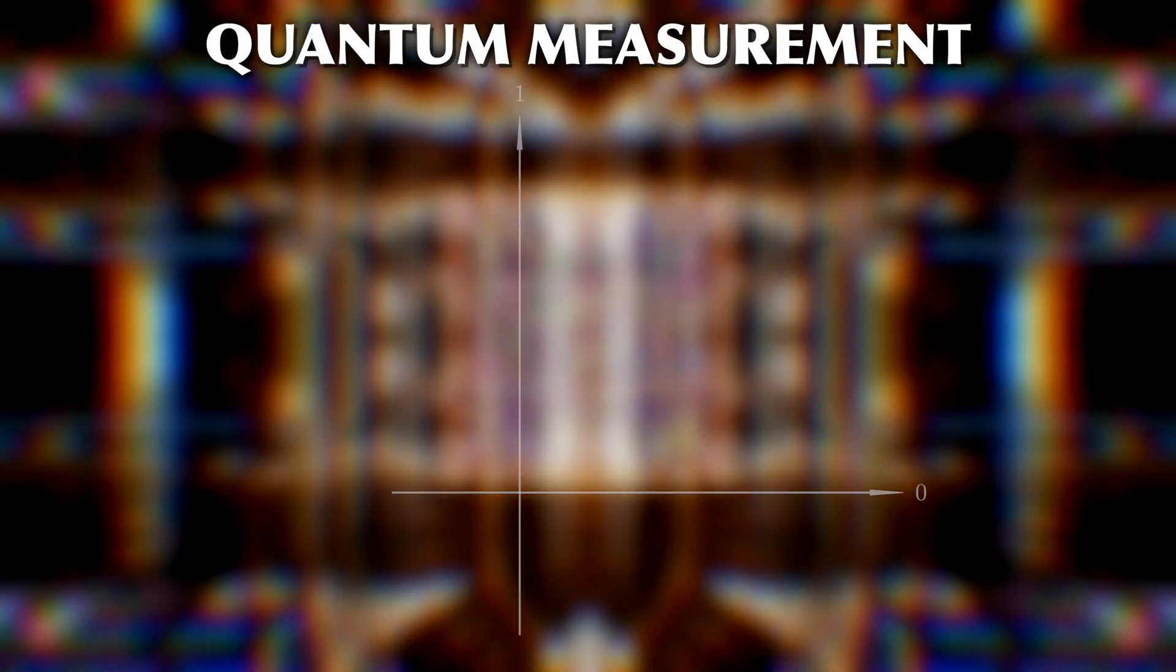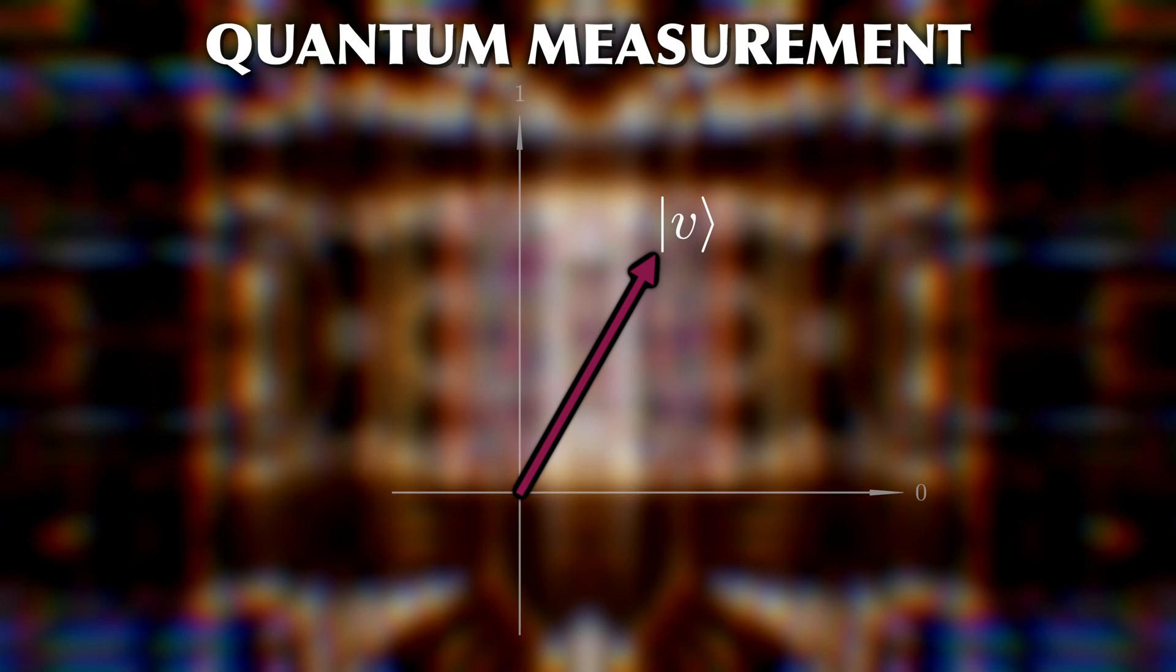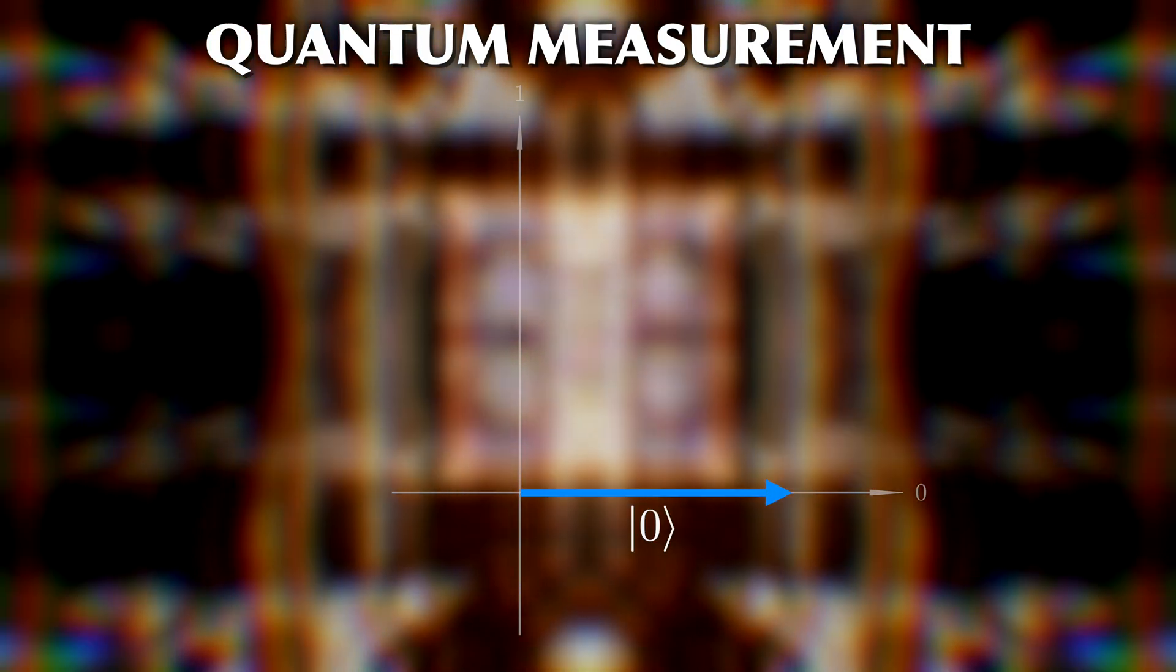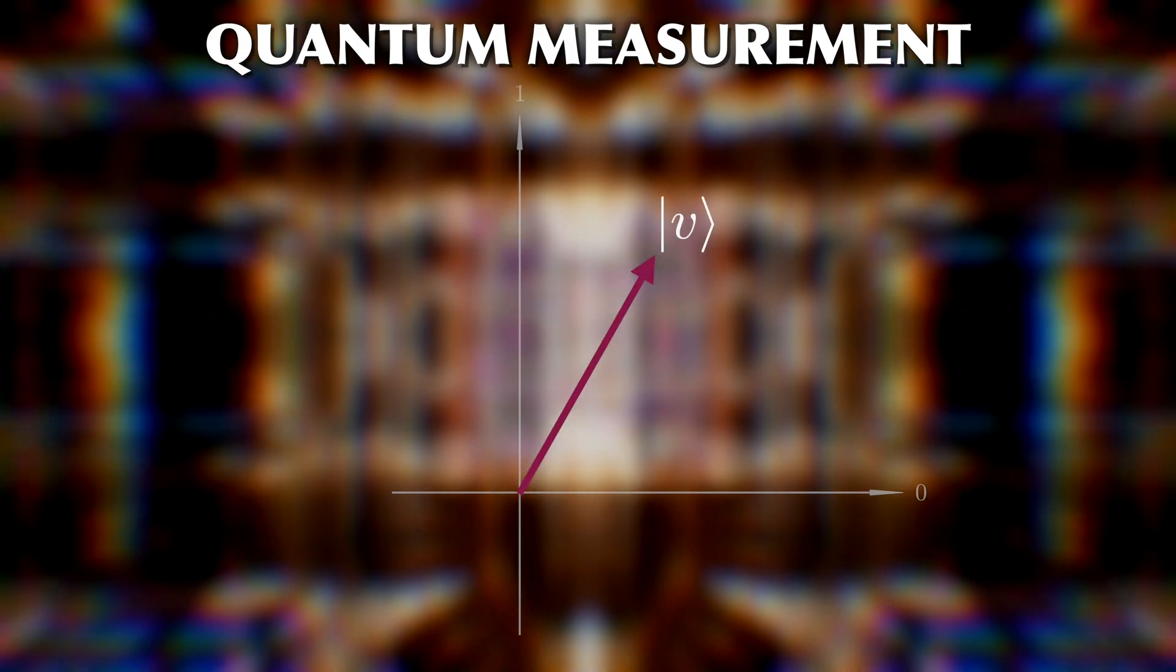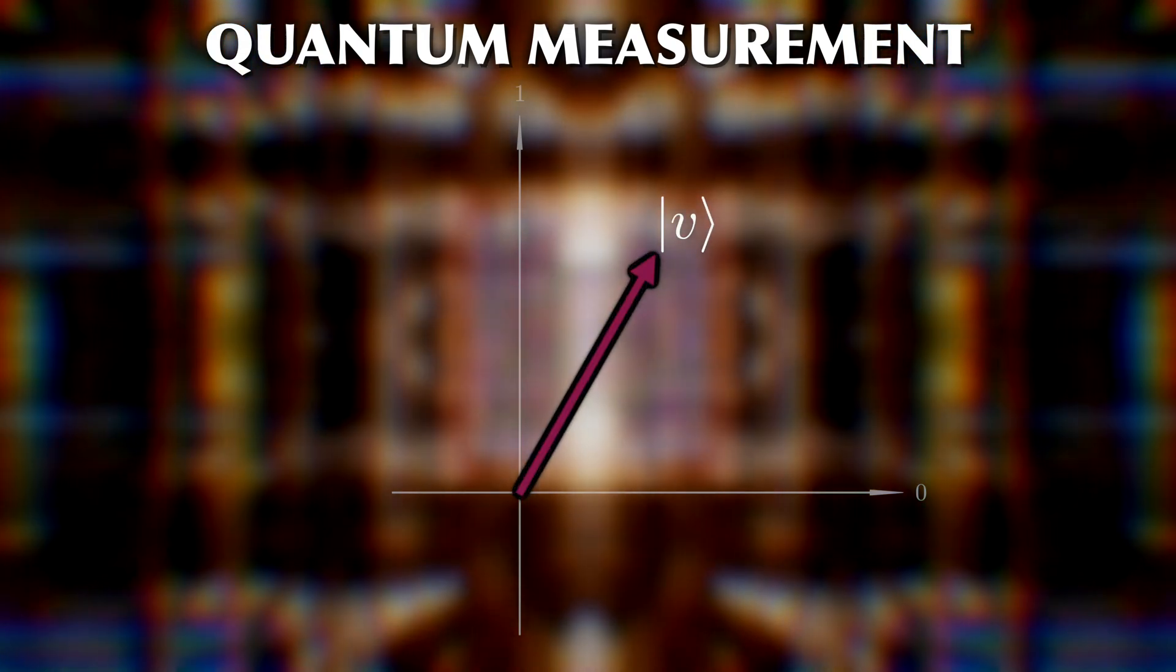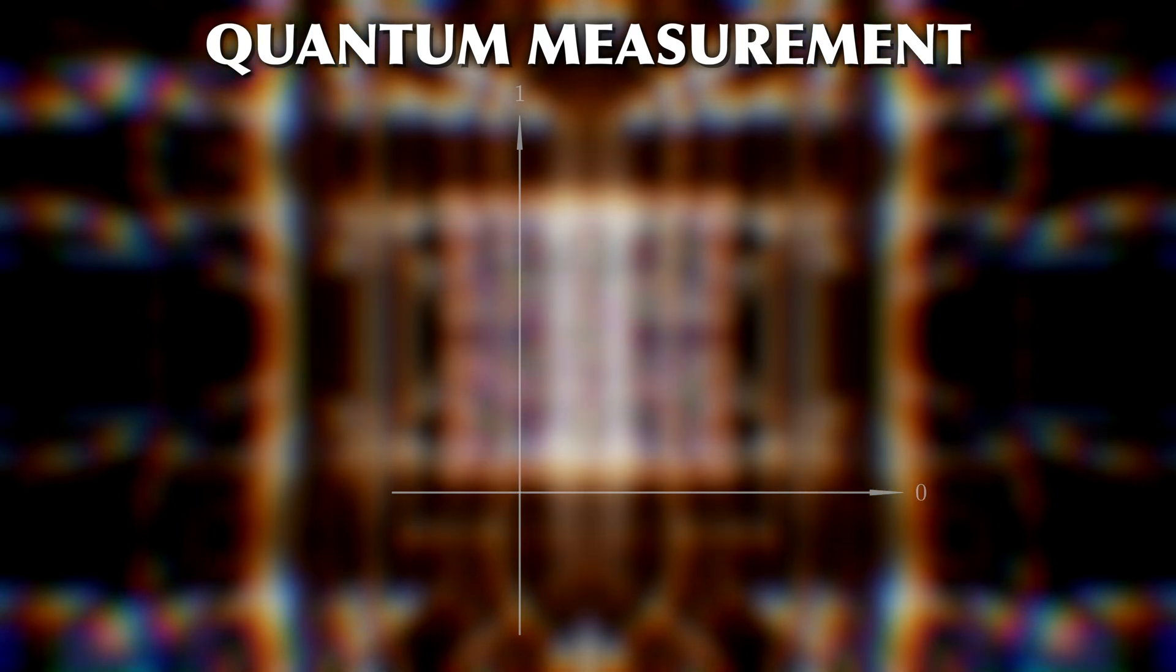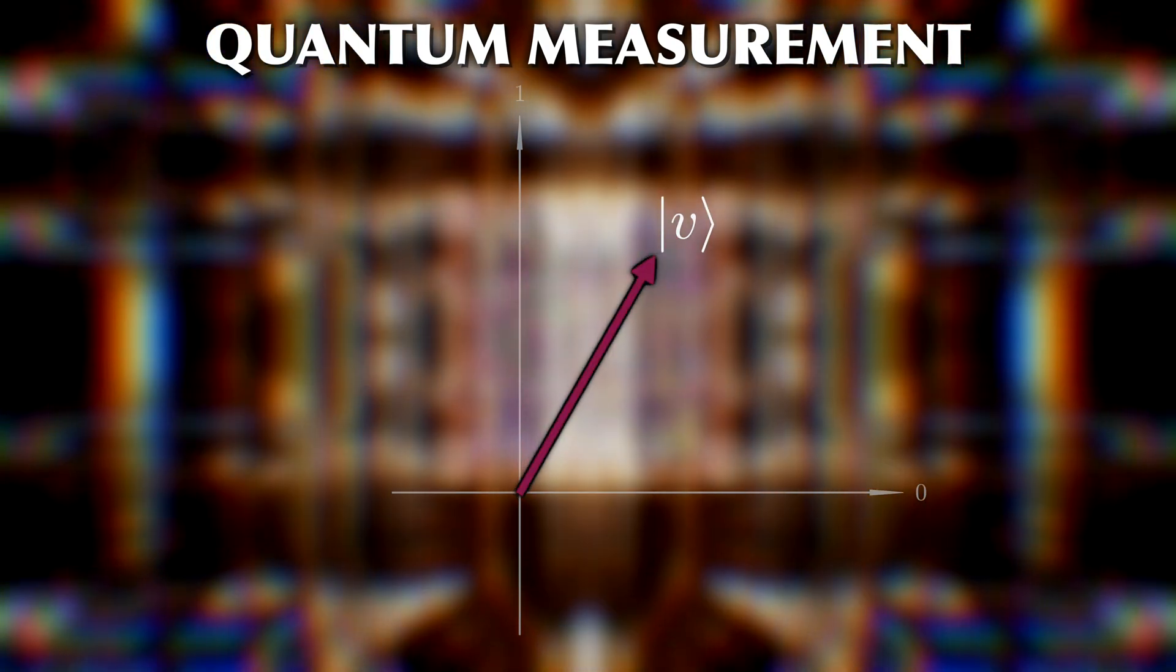Whenever you perform a measurement, the qubit is forced into one of the possible basis states. So you can only ever measure zero or one, never both. So, even if you can potentially encode more information in qubits, you can only ever get one bit of information out.